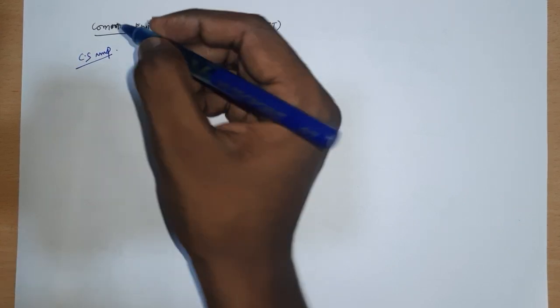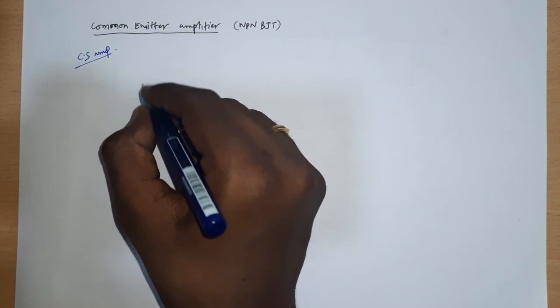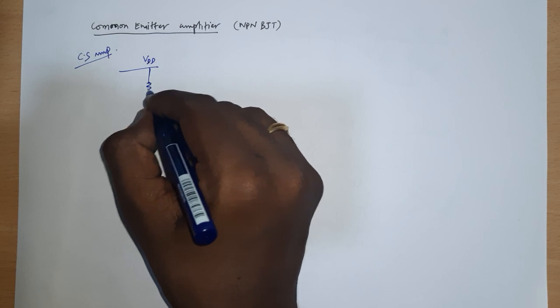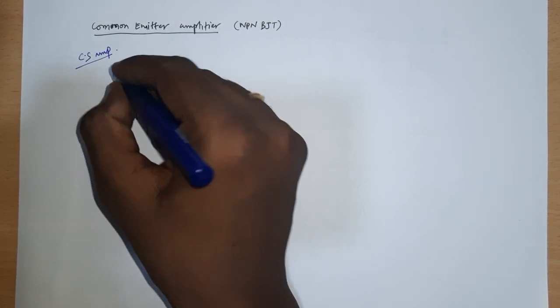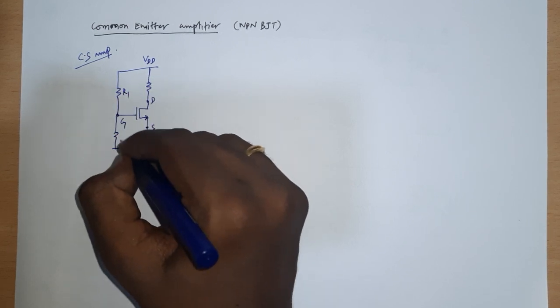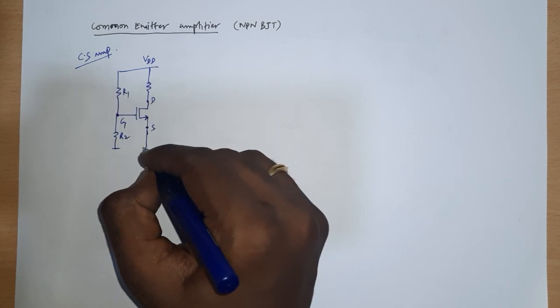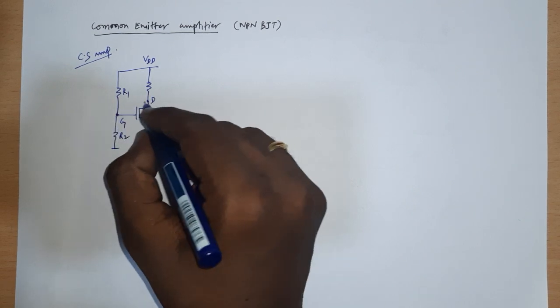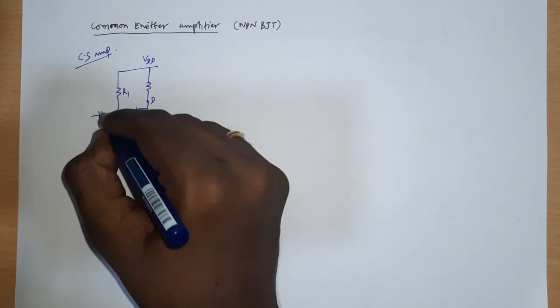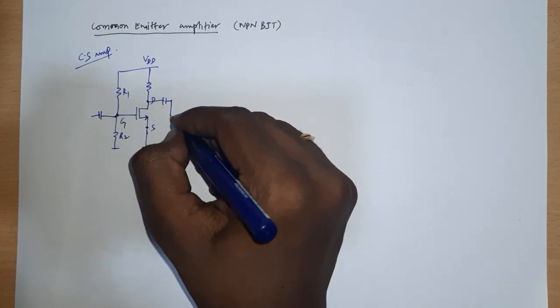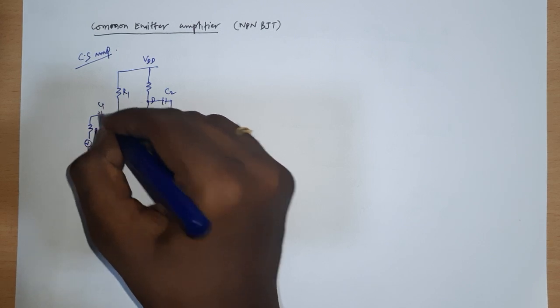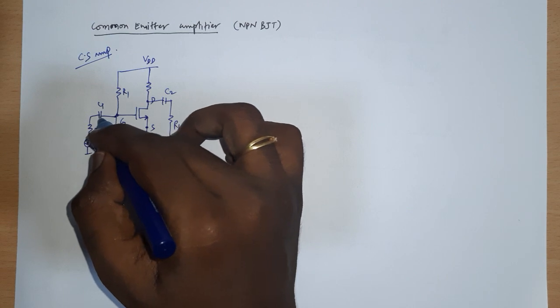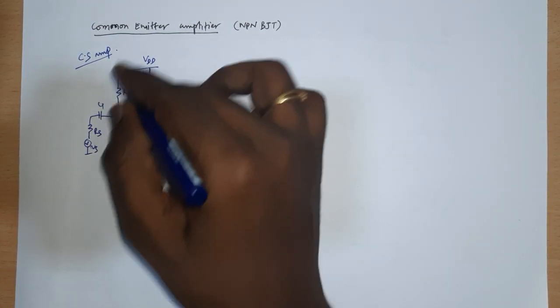Before that, let us see how we did the common source amplifier. For the common source amplifier without feedback, we had a VDD line and used a drain bias resistor to bias the drain of the transistor. This is the drain, this is the source, this is the gate, and I have resistors R1 and R2 for biasing the gate — it's a voltage divider bias. The source is grounded; it's a common source amplifier. Signal is given at the input and output is taken here. We also connect RL as the load and the source through coupling.